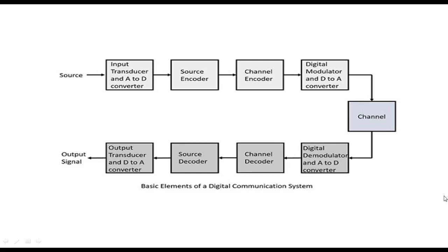In analog modulation, the modulating signal is an analog signal. What we do is change parameters of the carrier — especially amplitude, carrier frequency, carrier phase, and carrier amplitude. The carrier could be analog or digital — the RF signal could be both analog or digital. That's what we do, like in the second and third modules.